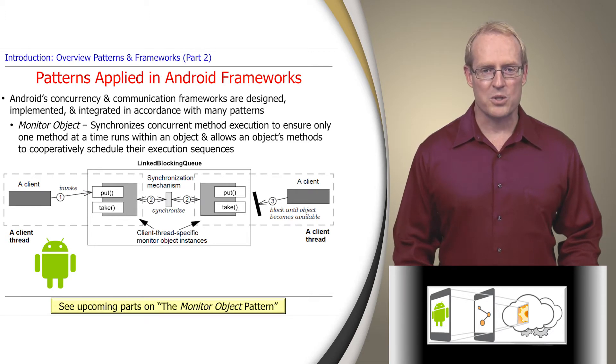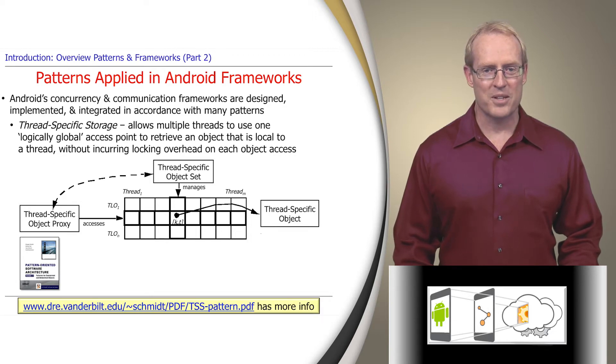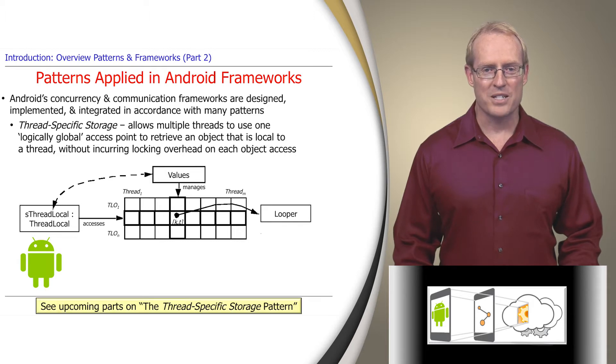The thread-specific storage pattern allows multiple threads to use one logically-global access point to retrieve an object that's local to a thread, without incurring locking overhead on each object access. The Android Looper class applies this pattern by using a Java thread local object to ensure only one looper is created per thread, as described in these upcoming videos.